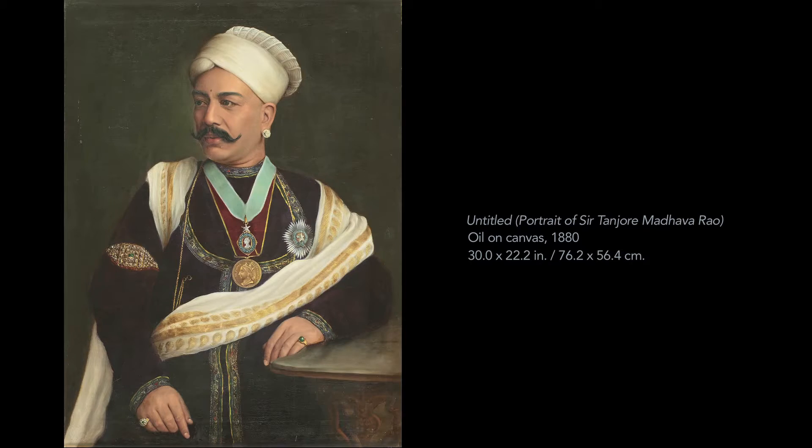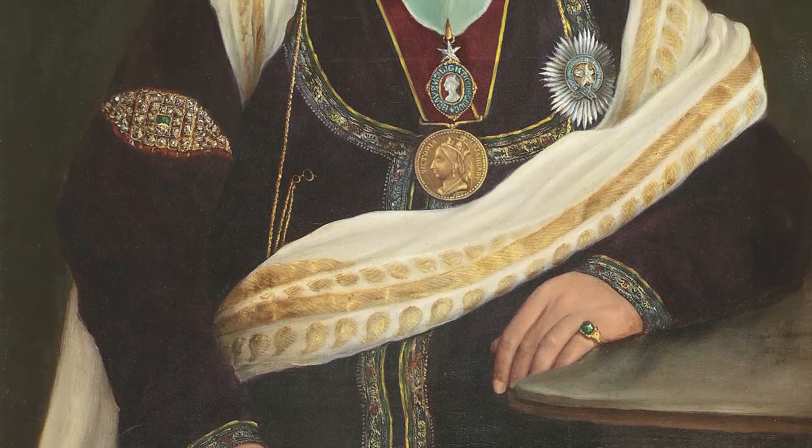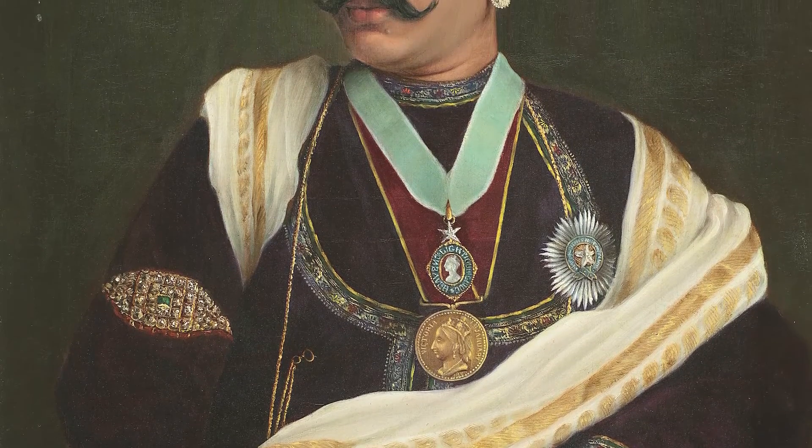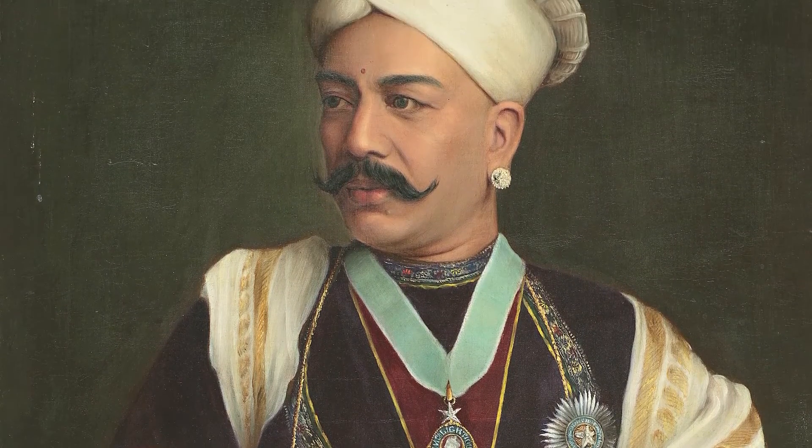Raja Ravi Verma is an extremely significant figure in Indian art for the innovations he brought. He adopted the western oil technique and applied it remarkably to Indian mythological and religious subjects — the gods and goddesses he painted came to define Hindu imagination for the subsequent century and more. He also painted commissioned portraits of royalty and nobility. His style became especially popular after calendar prints of his works were printed affordably at his own printing press in Lonavala. In his wake, a veritable school evolved, today loosely called the Ravi Verma school, because of its fidelity to his style.